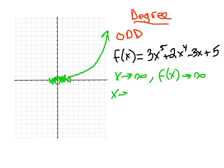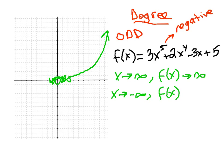What happens if we plug in numbers that are more and more negative? If you plug in a negative number and raise it to an odd power, the result is also negative. So the leading term 3x⁵ will be negative. As you plug in more and more negative numbers, our leading term becomes more and more negative, so the function will be approaching negative infinity — it goes down. This is what happens with odd-degree polynomials: the end behavior points in opposite directions. One side goes up and the other side goes down.